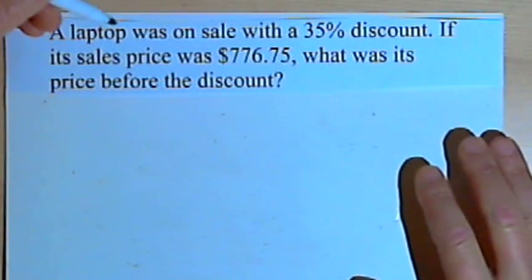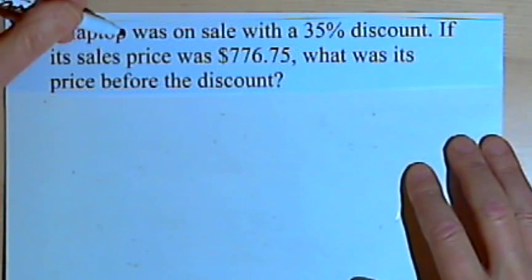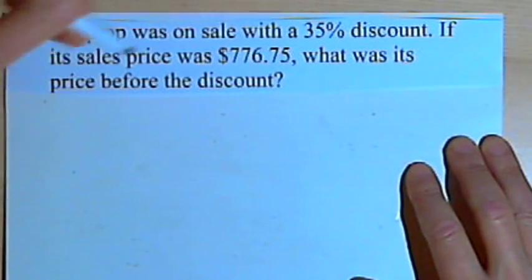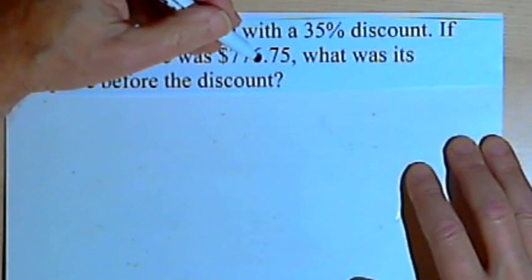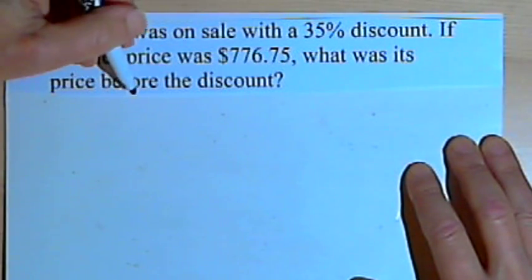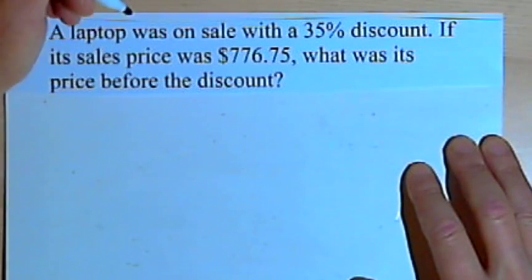This example is a little more complicated. A laptop was on sale with a 35% discount. If its sales price was $776.75, what was its price before the discount? Here's what we have to understand.